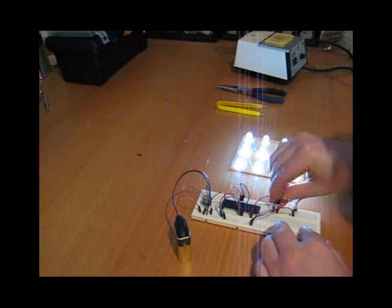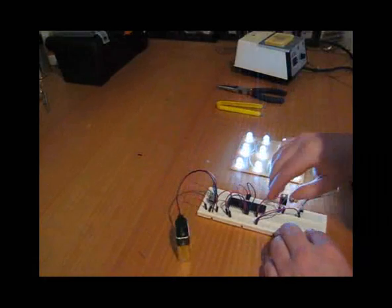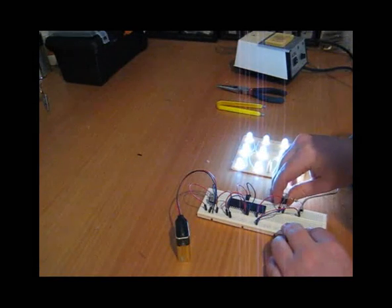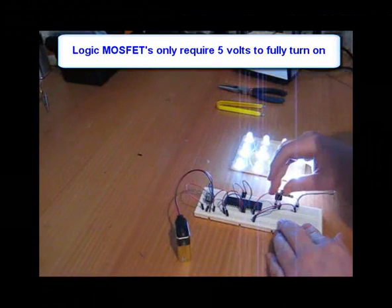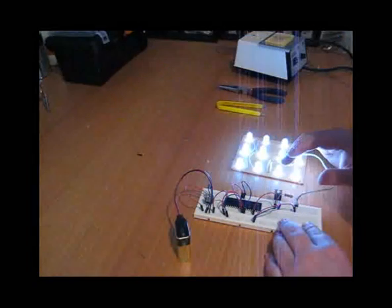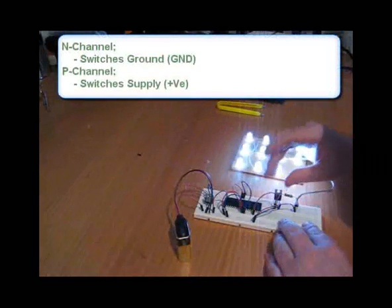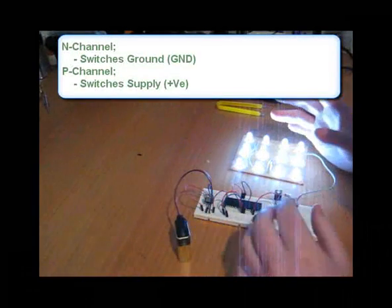My MOSFET is turning on and off as fast as the program is asking it to. It's logic powered, so it doesn't need a very high voltage to turn on. Because this is an N channel FET, I can only turn on and off in Earth. If I wanted to turn on and off the supply, then I'd use a P channel FET. An easy way to remember that is you need an N to switch negative and a P to switch positive.